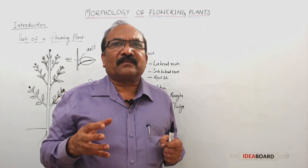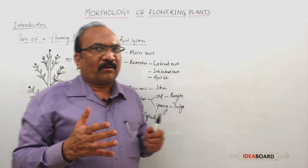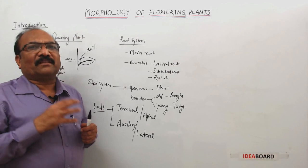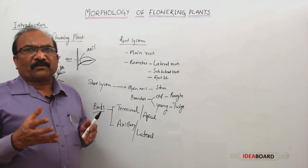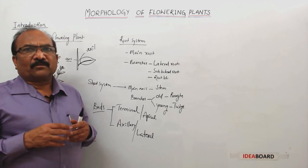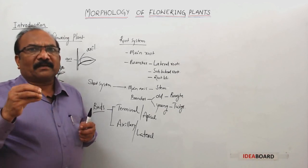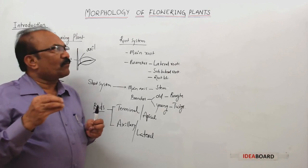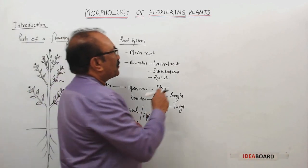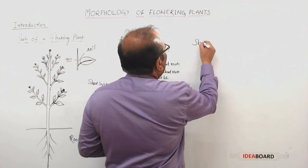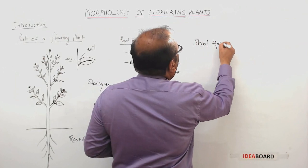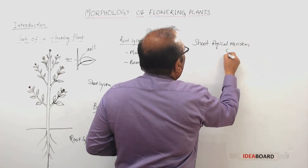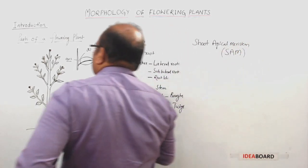Terminal buds are composed of meristematic tissue — specifically apical meristem. They help in the growth of the stem and branches. Axillary buds are present in the axils of the leaves, and they are also composed of meristematic tissue. The apical meristem present in these buds is called Shoot Apical Meristem, abbreviated as SAM.